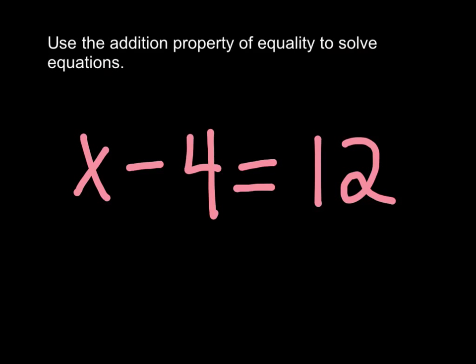Here we have the equation x minus 4 equals 12. Using the addition property of equality, I will add 4 to both sides of my equation.